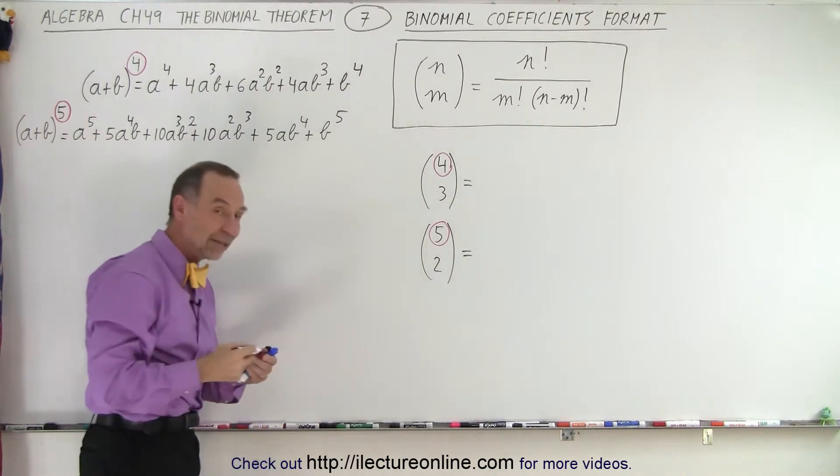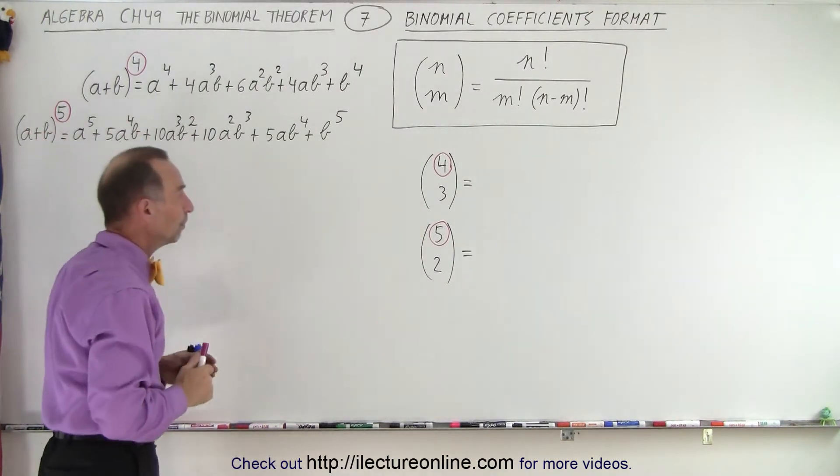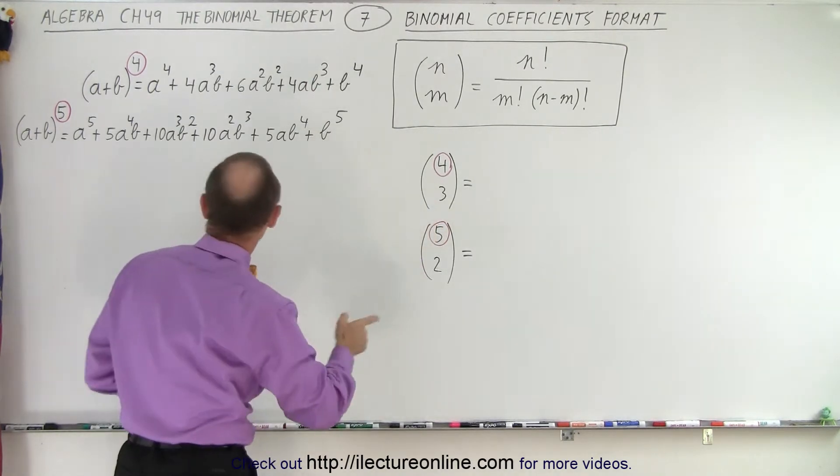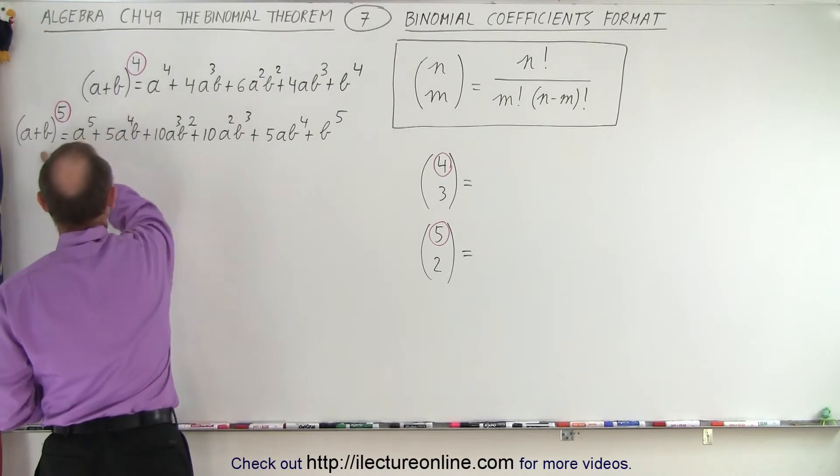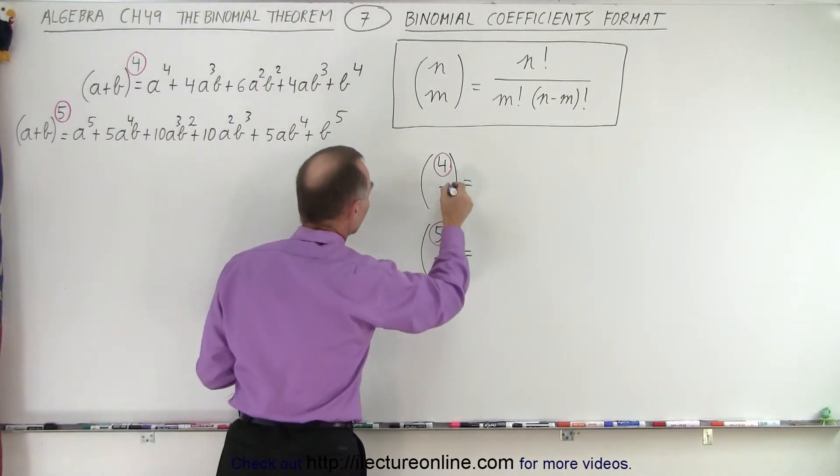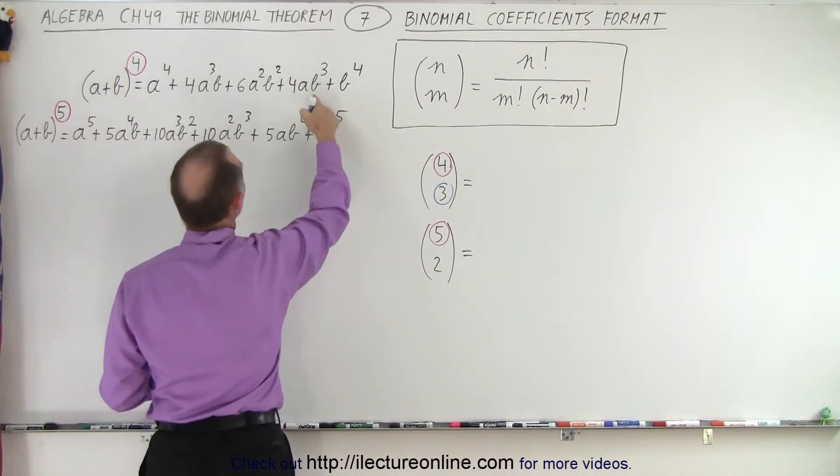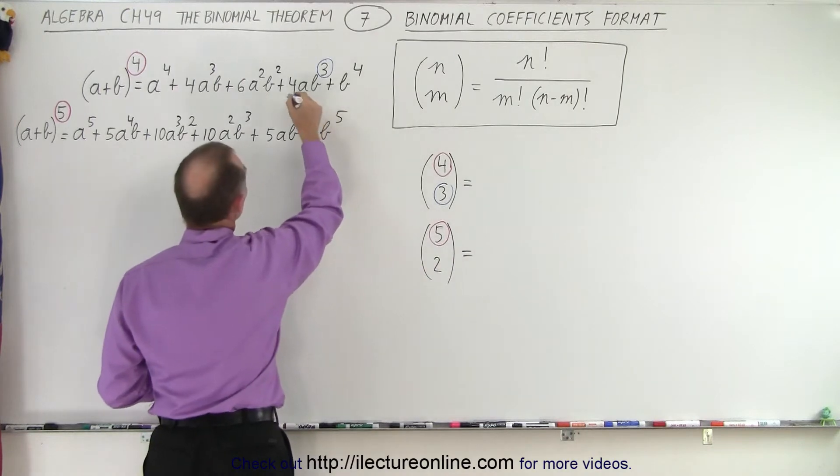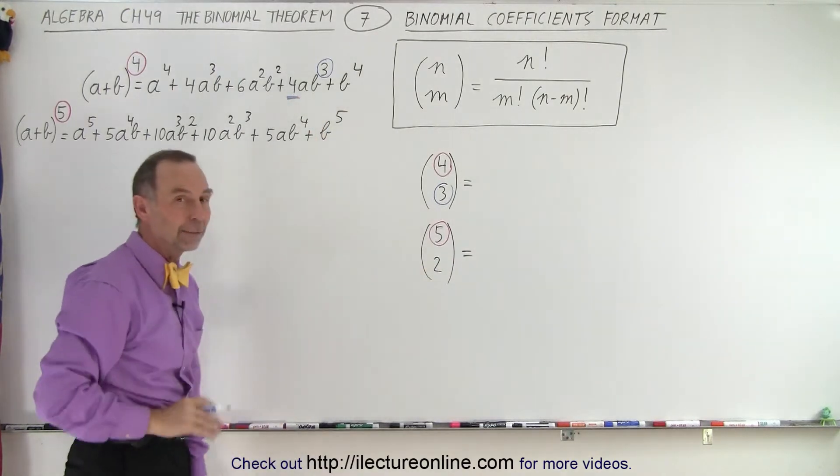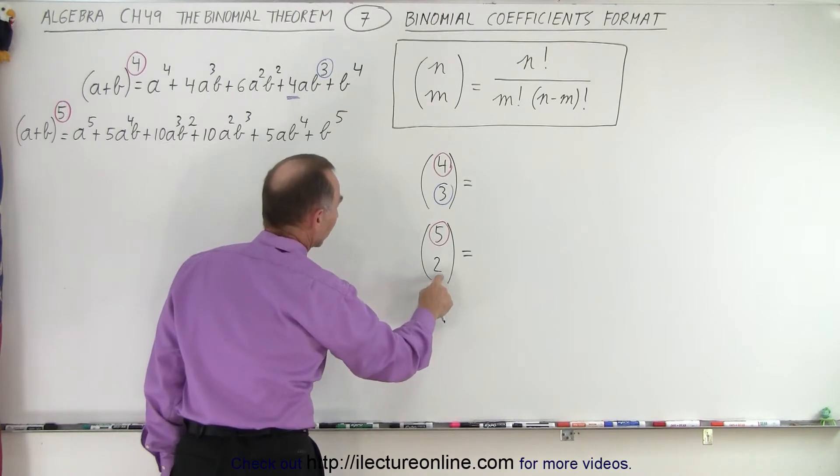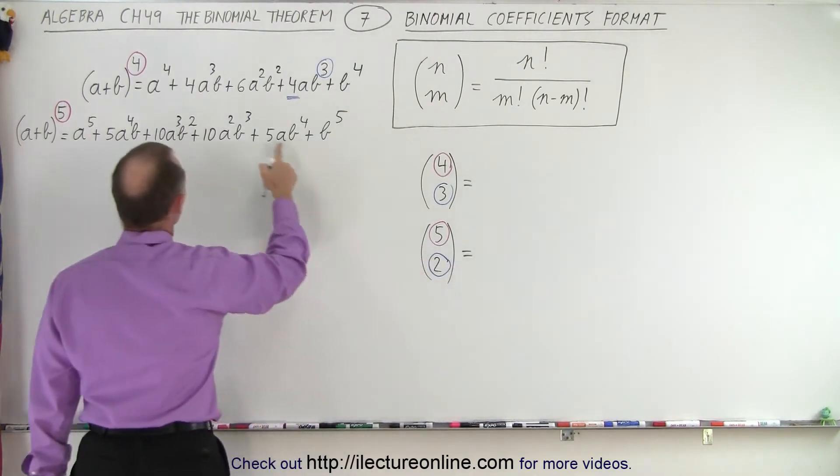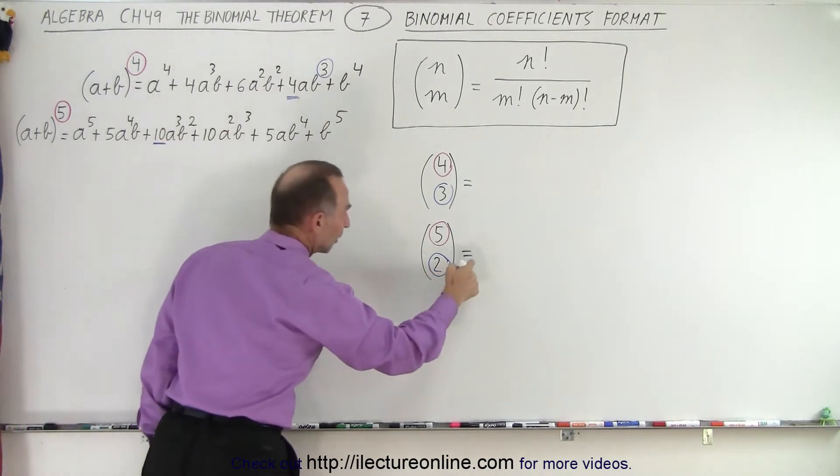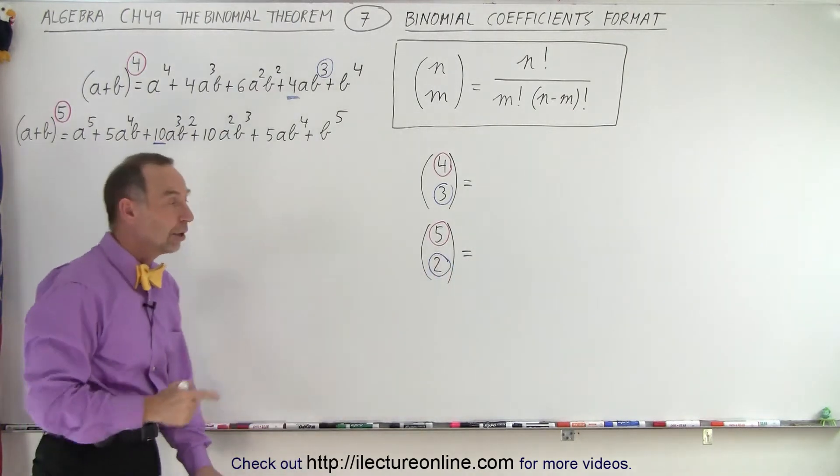The top number indicates the exponent of the binomial expansion. The bottom number indicates the exponent of the second term. Here you see 3, so we're looking for the term containing b to the third power. The result of this calculation equals the numerical coefficient of that particular term. In this example, we're looking for b to the second power, so we're finding this numerical coefficient.